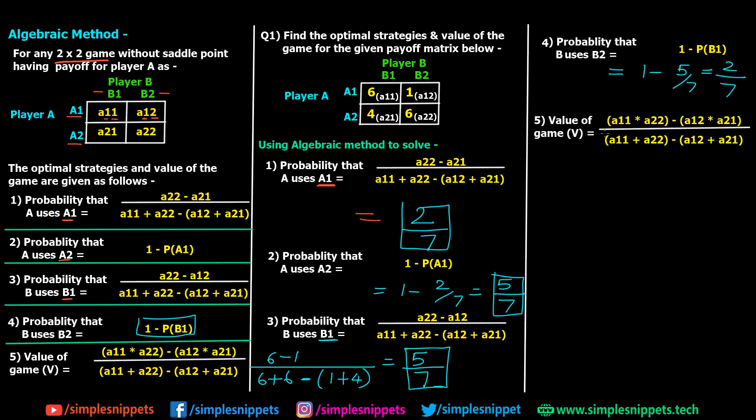Only one last thing that we have to do is calculate the value of the game. The value of the game is given by this formula. This will be A11 which is 6, into A22 which is again 6, whole minus A12, so A12 is 1, into A21, so A21 is 4, the whole upon A11 plus A22, so A11 is 6 and A22 is 6, so 6 plus 6, minus A12 plus A21, so A12 is 1, plus A21 is 4. The denominator here is also again same for all the formulas. So this will be equal to 32 upon 7.